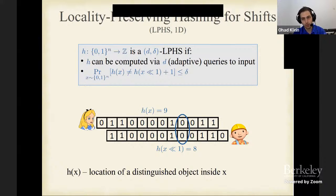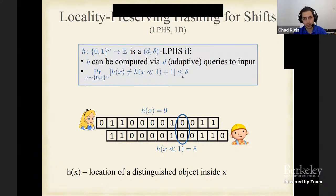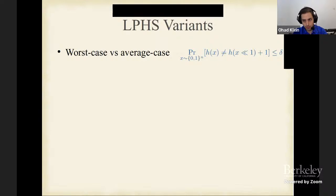We say a function h from strings to locations is a (d, delta)-LPHS if h reads d bits from the input, and the probability that h(x) does not equal h(x shifted by one) is smaller than delta — meaning the probability that the distinguished location differs between x and its shifted variant is small.